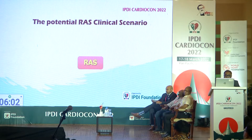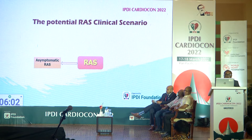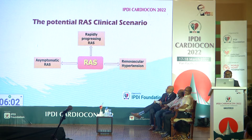The overlap of peripheral arterial disease and renal artery stenosis is also significant. If renal artery stenosis is present, it may remain asymptomatic, it may develop renovascular hypertension, rapidly progress, or lead to ischemic nephropathy.